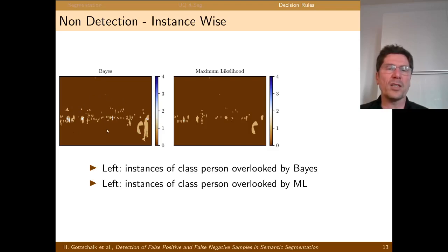This is here the same thing visualized. So over 20,000 images, these are all the overlooked instances for the Bayes, and these are overlooked instances for the maximum likelihood decision principle.